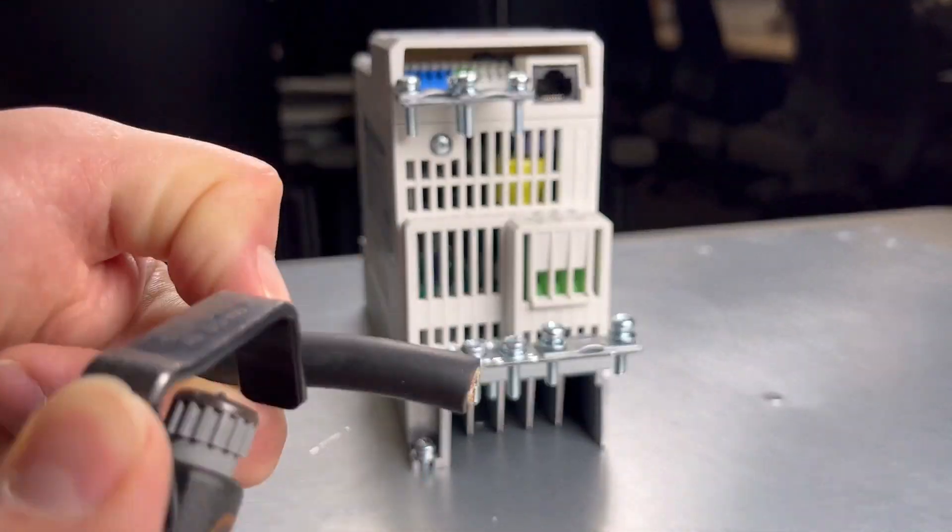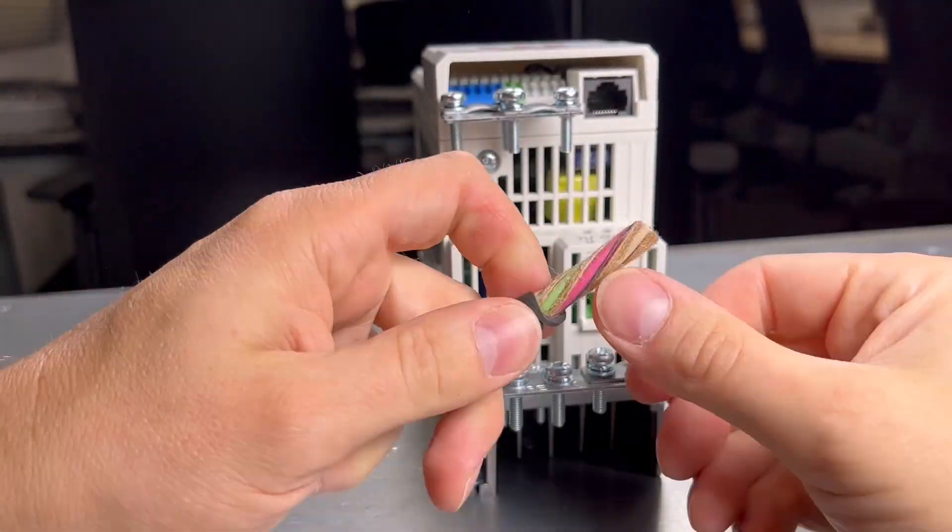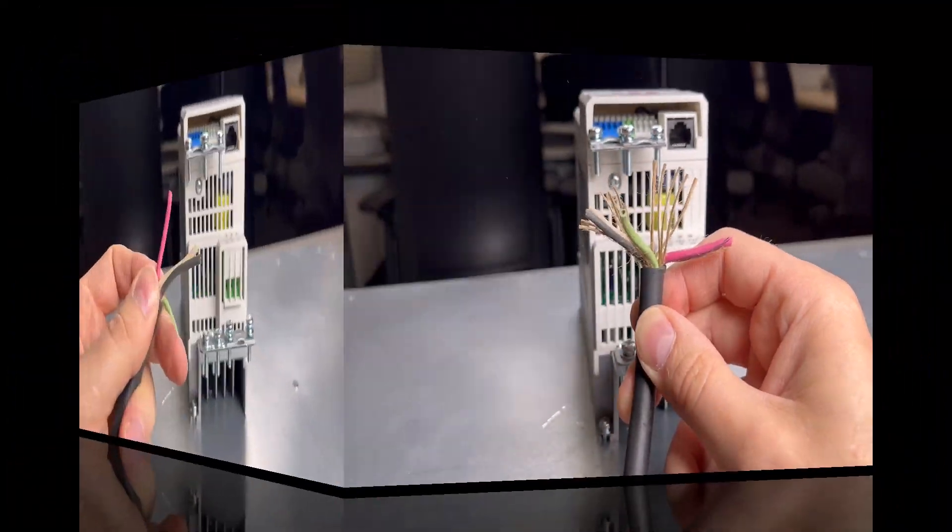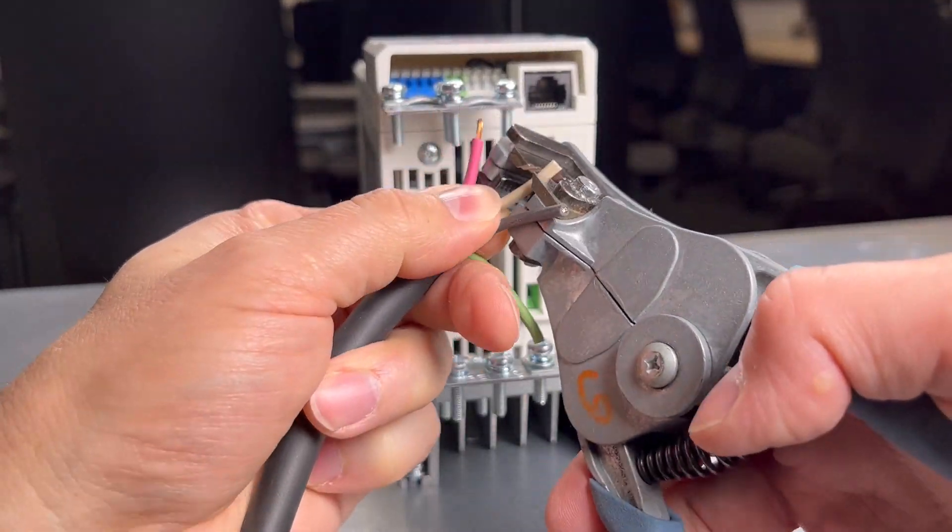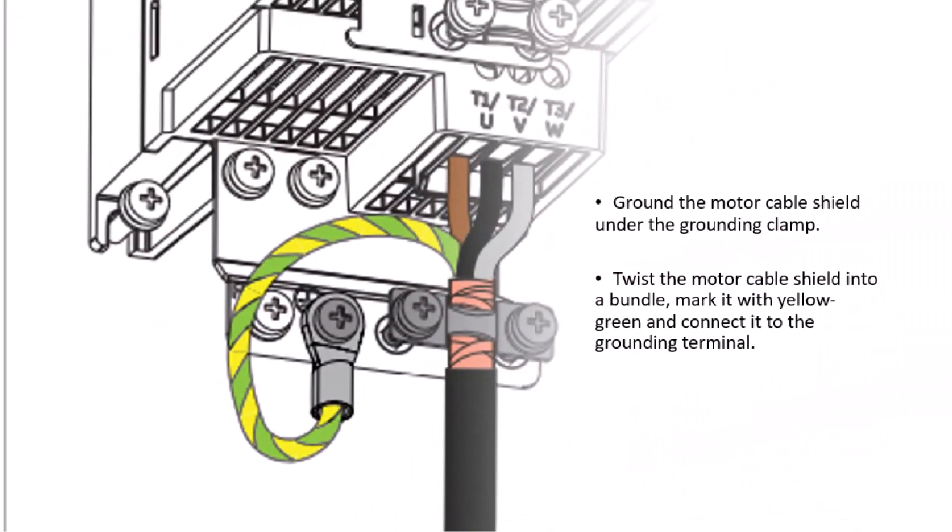Prepare the motor cable conductors. Ground the motor cable shield under the grounding clamp. Twist the motor cable shield into a bundle, mark it with yellow-green tape, and connect it to the grounding terminal.